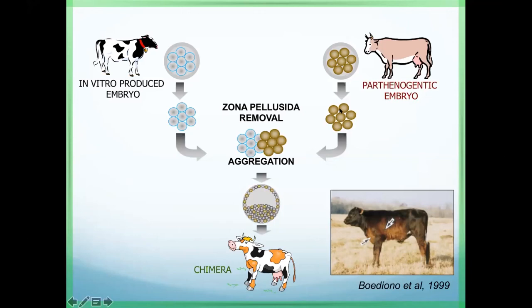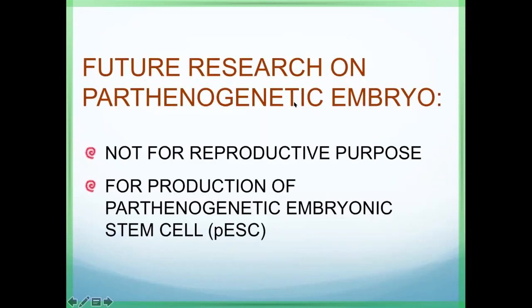I tried to produce parthenogenetic embryos, but we cannot get a baby from this embryo alone. So I aggregated the parthenogenetic embryo with a normal in vitro produced embryo. After aggregation we got a blastocyst and transferred it, getting one calf born in Louisiana and one born in Yamaguchi — reported in 1999. The parthenogenetic cells can contribute to the offspring if combined with normal embryo cells.